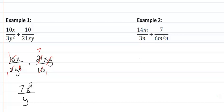On our second example, again we want to change this to a multiplication problem. So we are going to take 14m all over 3n times 6m²n over 7.